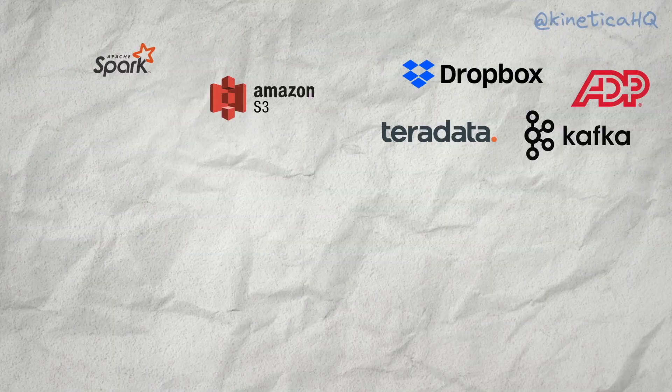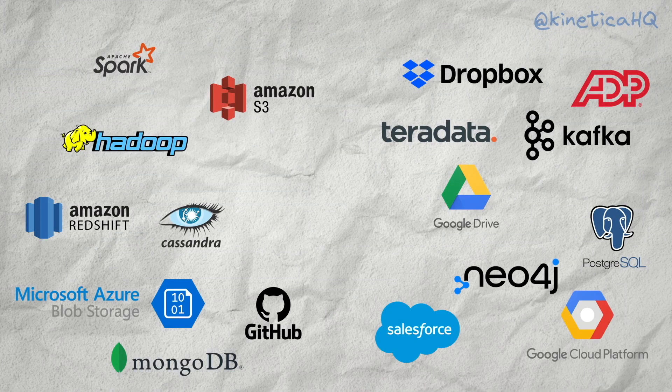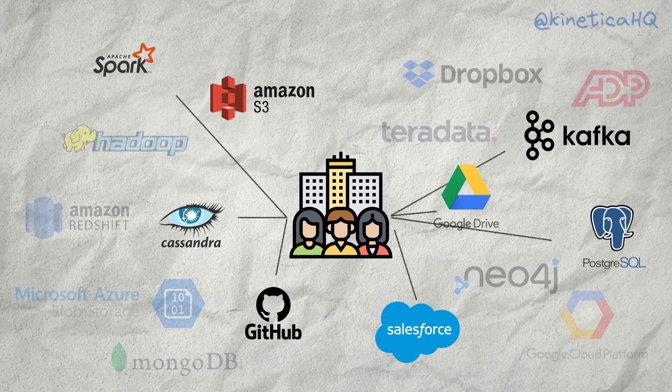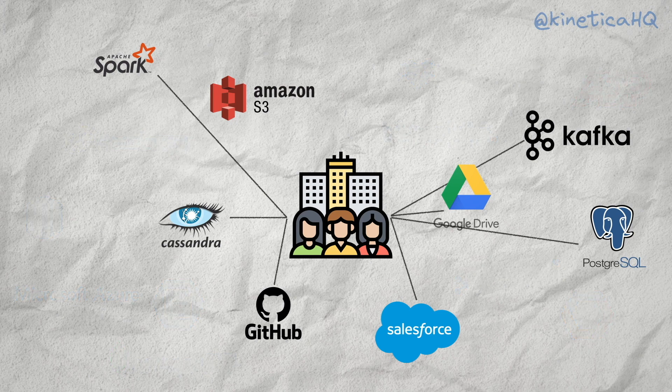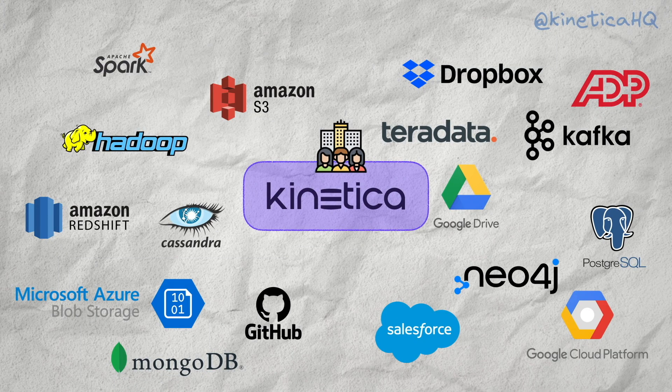There are so many types of repositories for data today, and each of these come with their own unique take on how to store and interact with the data. Any single organization might use a variety of these to manage their operations. The purpose of an analytical database like Kinetica is to load and analyze data from all of these different sources, so that we can have a single streamlined view of a business. But to do this, we have to connect and interact with all of these different types of data sources.